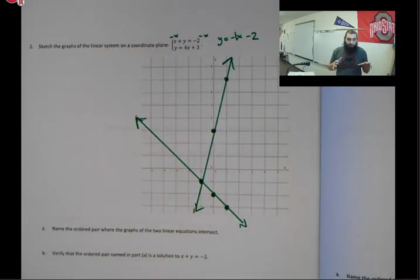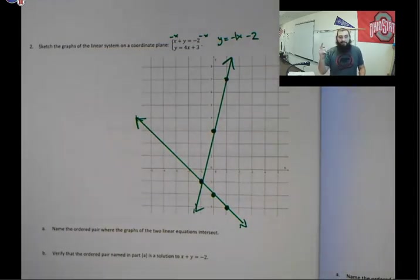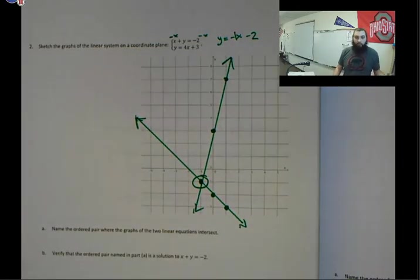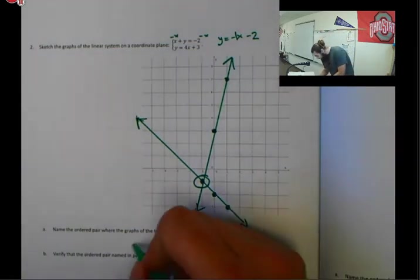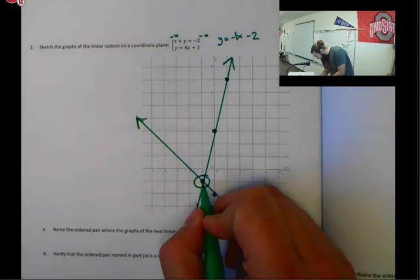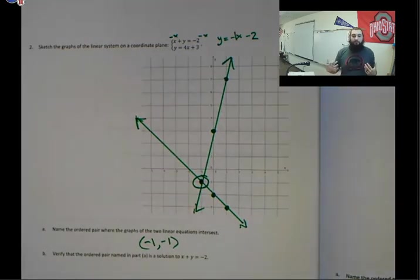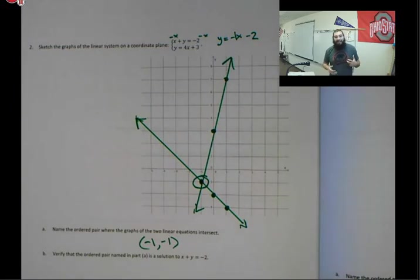And so really what we're looking for here, after we have both of these lines graphed on a coordinate plane, we're looking for the one place that our lines meet, the one place where our lines intersect. That point is right here. And so when we go to answer and name the ordered pair where the lines and graphs, that is our answer. So our ordered pair is at negative 1, negative 1. This is our solution to the system of equations.